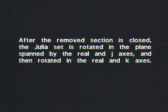After the removed section is closed, the Julia set is rotated in the plane spanned by the real and J-axis, and then rotated in the real and K-axis.